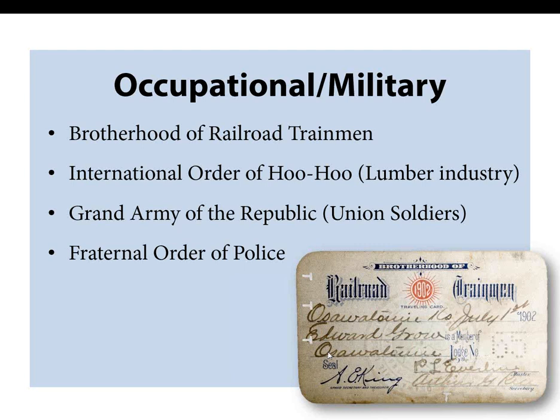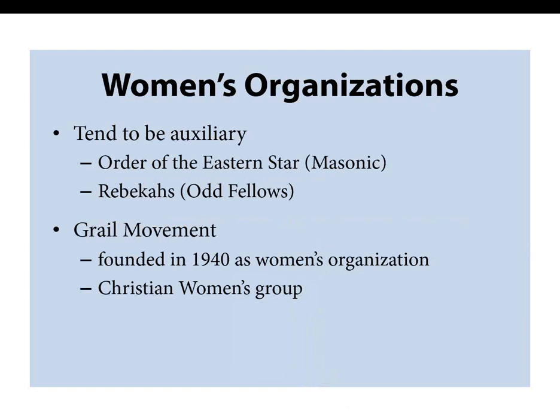When it comes to women, most women's organizations tend to be tied as an auxiliary to a men's organization. If you've got Masons, your women may have been in the Order of the Eastern Star. If your ancestor was an Odd Fellow, his wife may have been a Rebekah. One group that is still active and women's-only is the Grail Movement, founded in 1940 as a predominantly Christian women's group — very free-thinking and supportive of womanhood. It is still an active and viable group today.